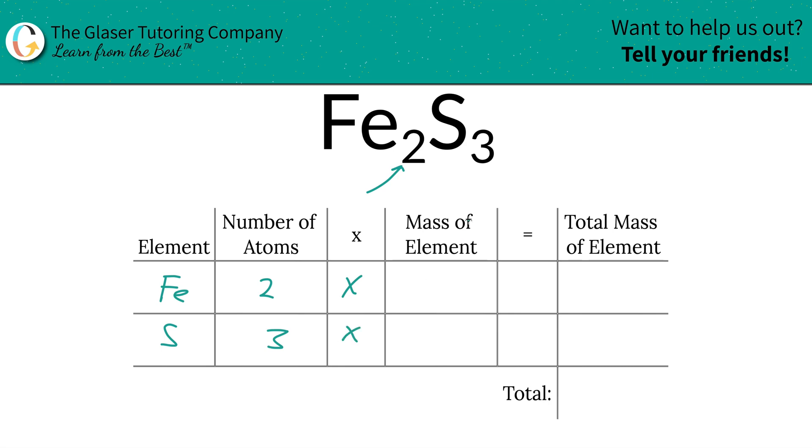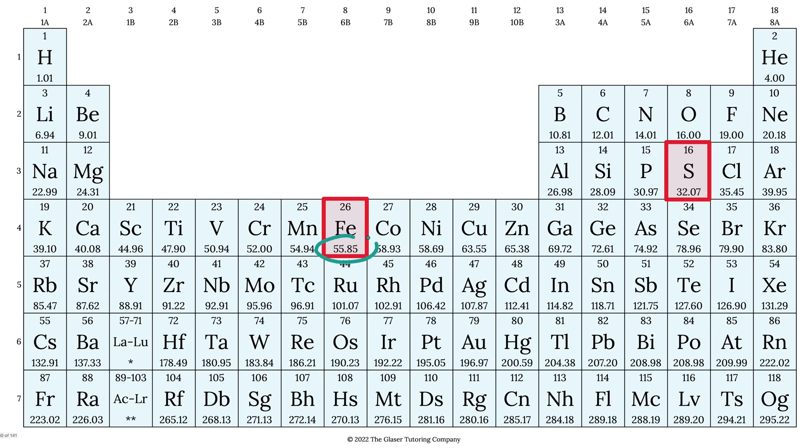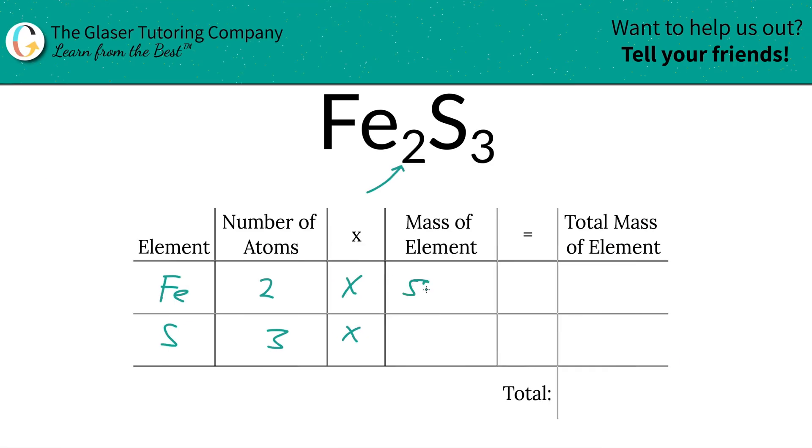Then we're going to take those number of atoms and multiply it by the mass of each particular element. Those masses are found on the periodic table. So iron is 55.85, and sulfur is 32.07. So we're going to write them in. So this is 55.85, and this is 32.07.